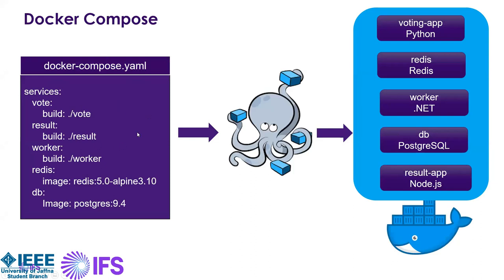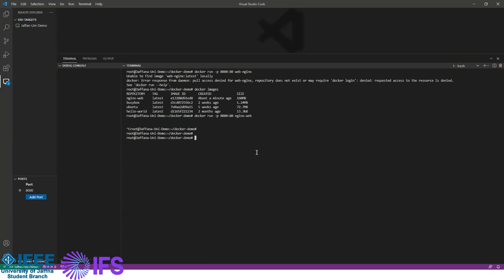The Docker Compose file is a configuration file in YAML format. Inside it, all services are defined. For example, a 'vote' service is configured to build from the Dockerfile inside the vote application folder and run inside Docker. To run everything, you simply execute 'docker-compose up' and all applications come up together. Each service specifies an image (like 'redis:5.0-alpine3.0' or 'postgres:9.4'), environment variables, ports, and volumes. Volumes let you mount folders from your laptop into the container — for example, a PHP developer can keep PHP files on their laptop and mount them as a volume into a web server container, making those files automatically available.